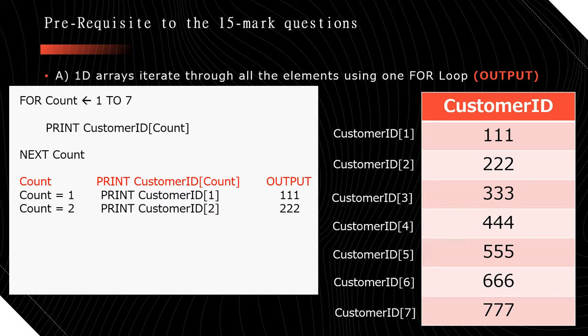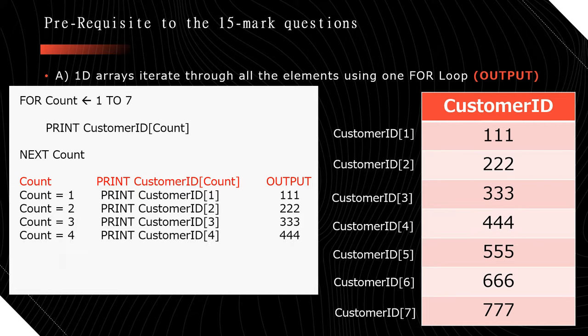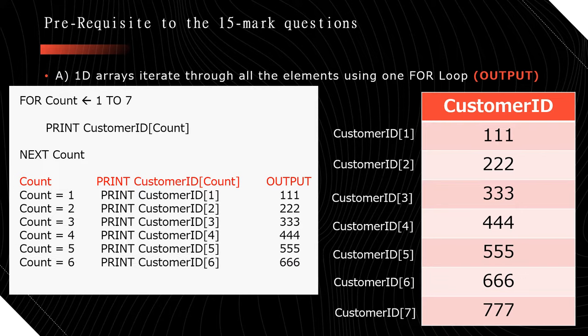Tracing through: count equals 1 prints 111 (implied from setup), count equals 2 prints CustomerID[2] which is 222, count equals 3 prints 333, count equals 4 prints 444, count equals 5 prints 555, count equals 6 prints 666, and finally count equals 7 prints CustomerID[7] which is 777.